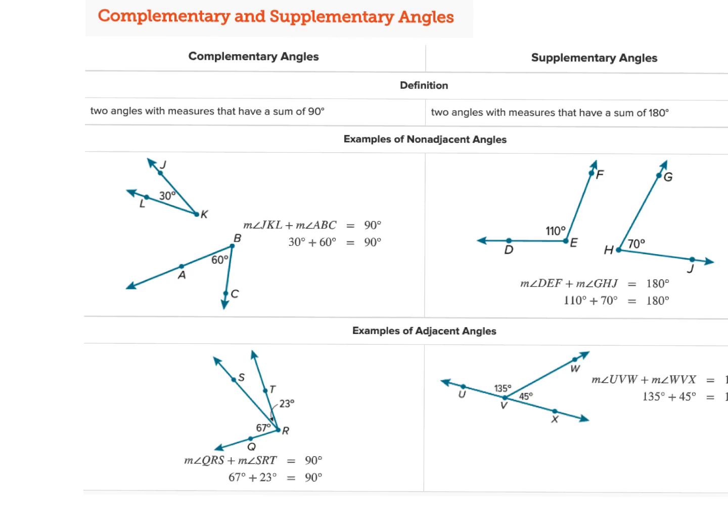These next two new angle pairs that we're going to talk about are complementary and supplementary angles. Complementary angles are simply two angles that, when I add the two angles together, equal 90 degrees.